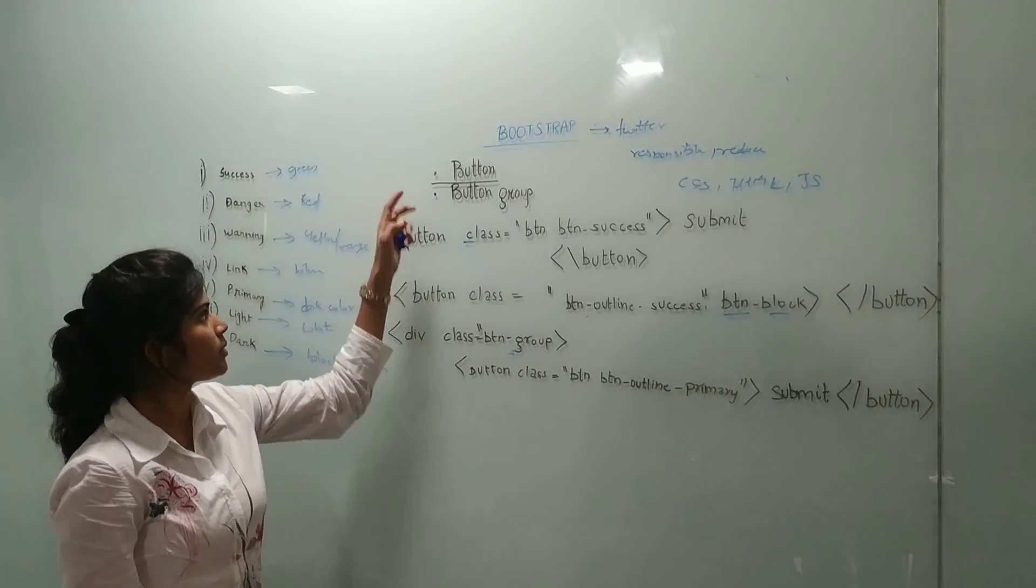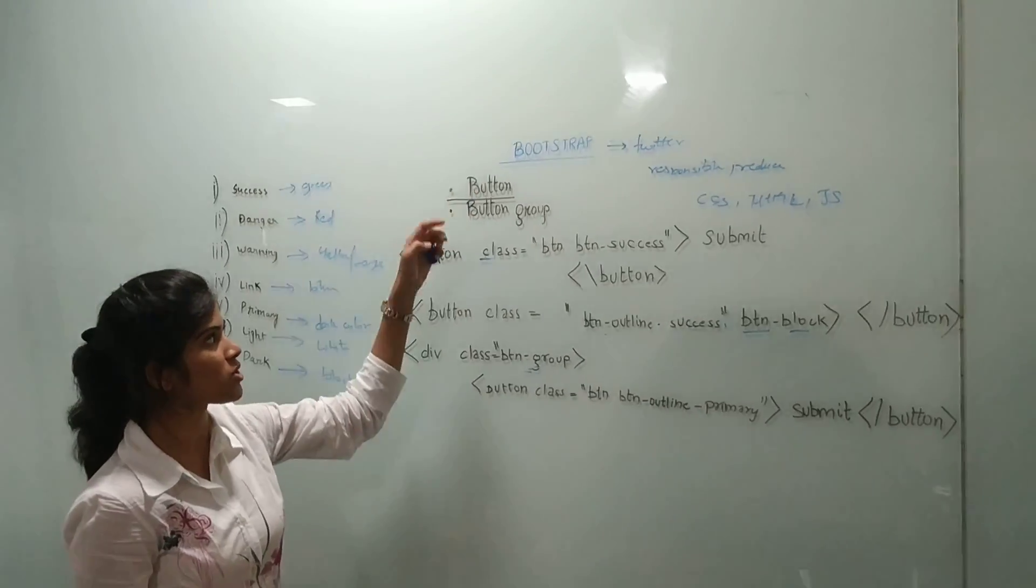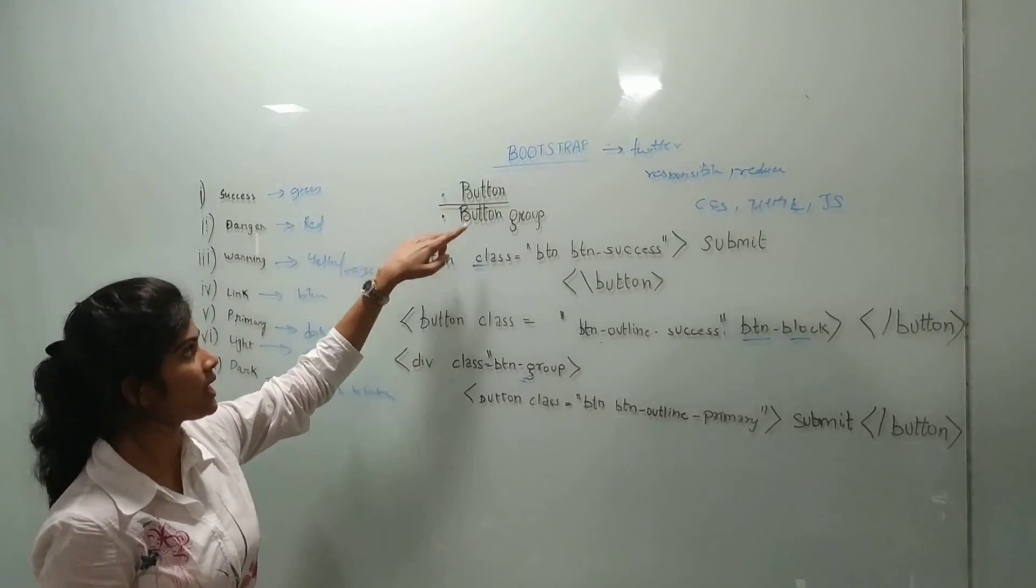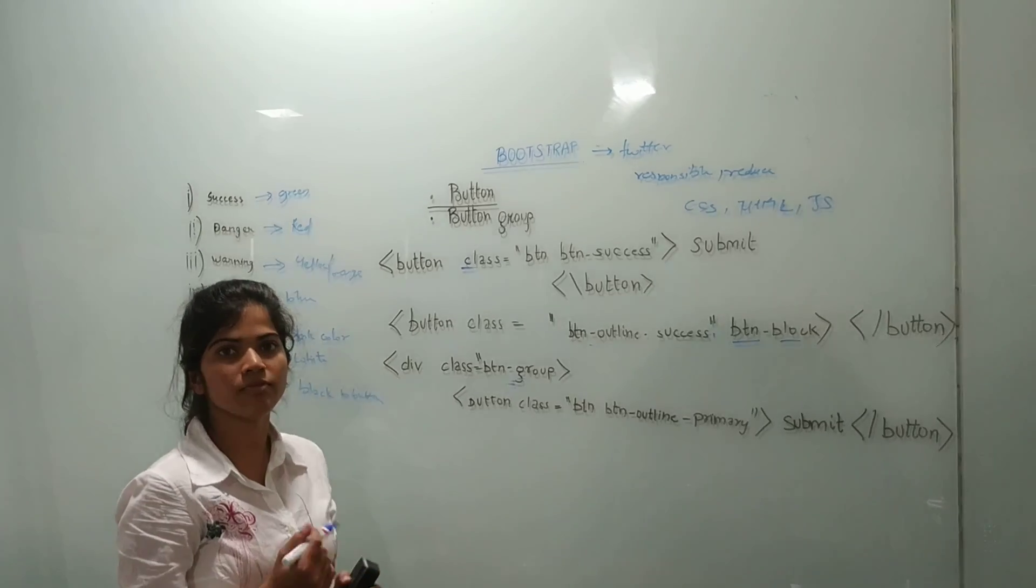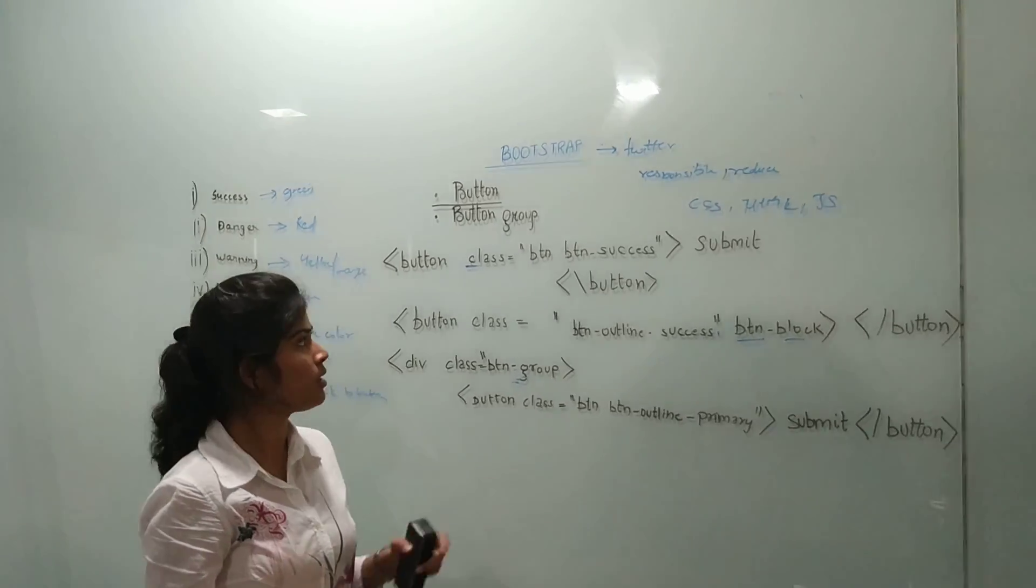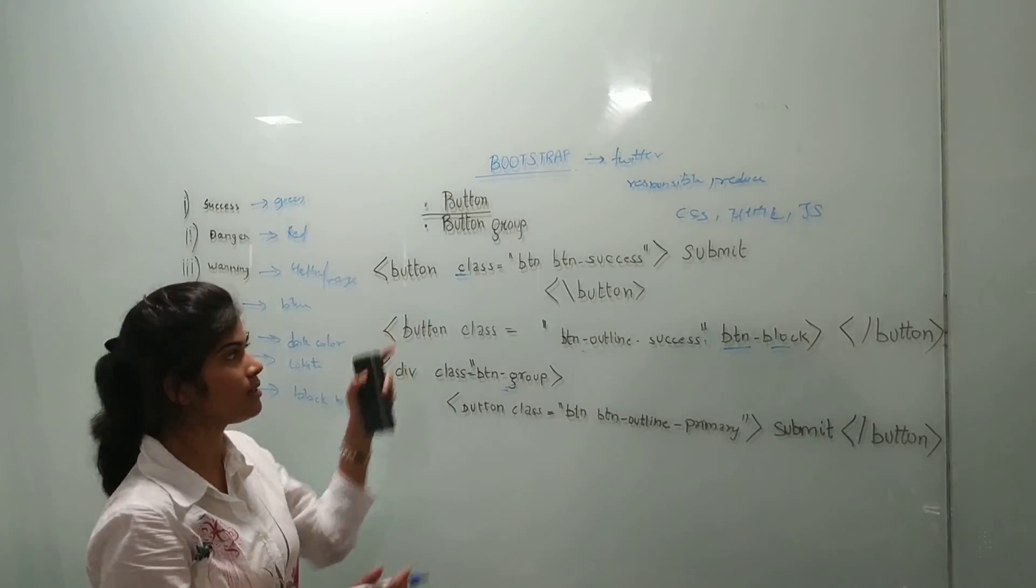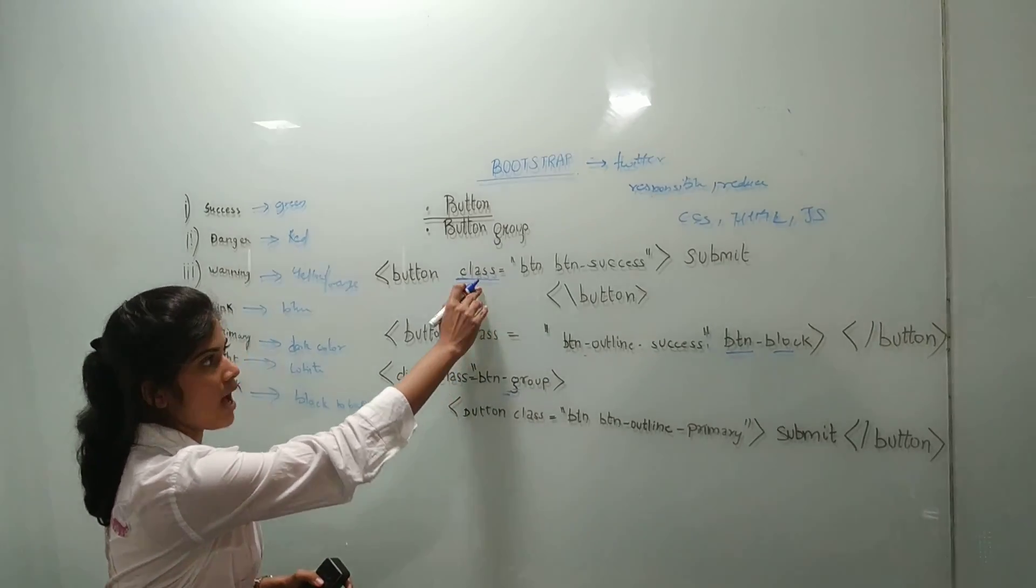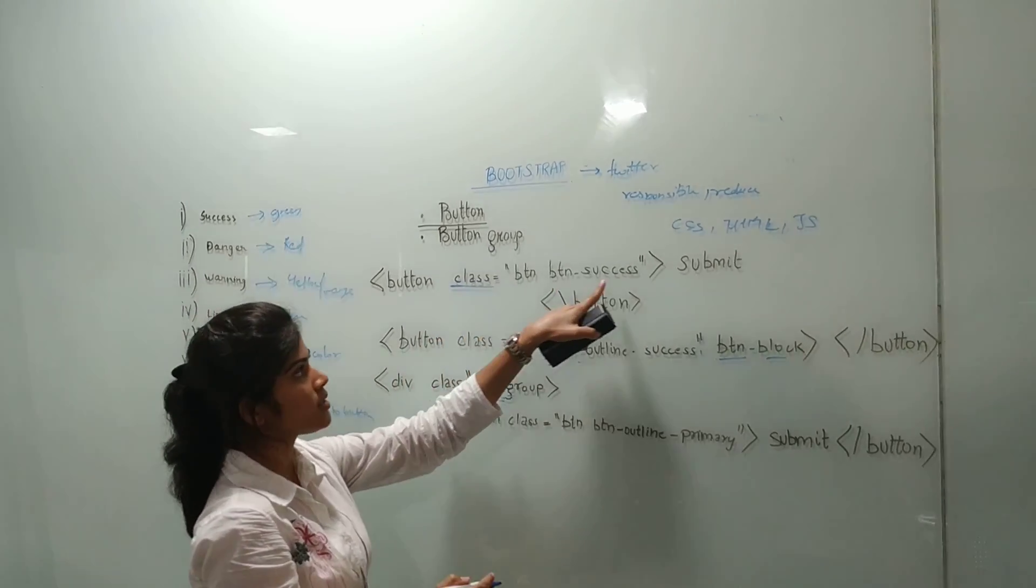Here there are two components, two tags in Bootstrap: Button and Button Group. Whenever we want to create any kind of button, we make use of button tag. Here we use an attribute class and button success.